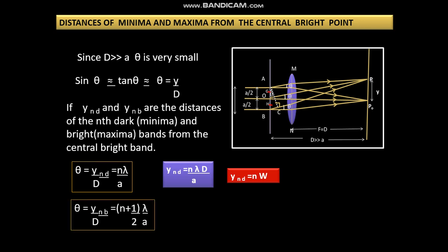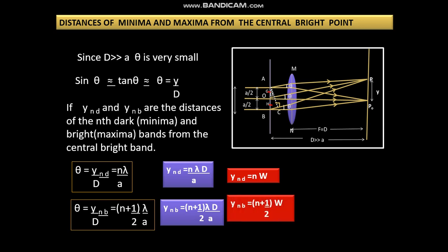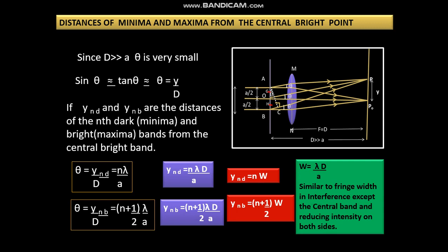Theta is equal to y_nb upon capital D that is (n plus half) lambda by a. So y_nb is equal to (n plus half) lambda D by a. So y_nb is (n plus half) W. W is equal to lambda D by a. Similar to fringe width in interference except the central band and the reducing intensity on both the sides.